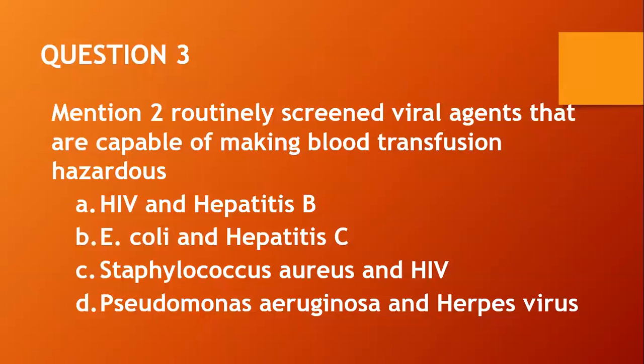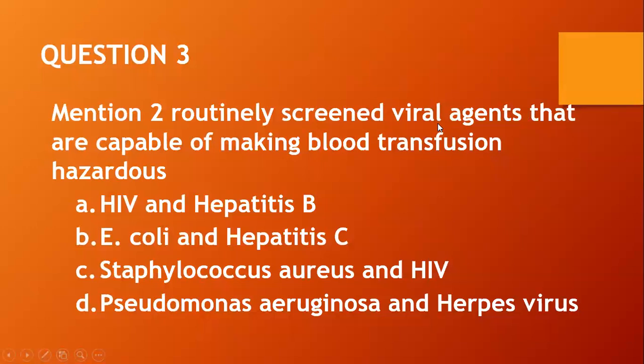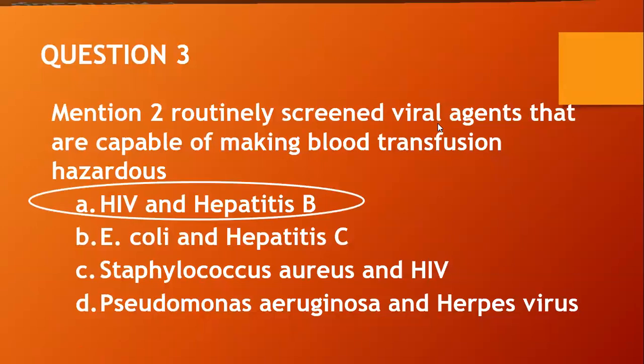Question three: Measures to routinely screen viral agents capable of making blood transfusion hazardous — A, HIV and Hepatitis B; B, E. coli and Hepatitis C; C, Staphylococcus aureus and HIV; D, Pseudomonas aeruginosa and Herpes virus. I won't go with B because E. coli is not a virus. Staphylococcus is not a virus, Pseudomonas is not a virus. So the best option is A.